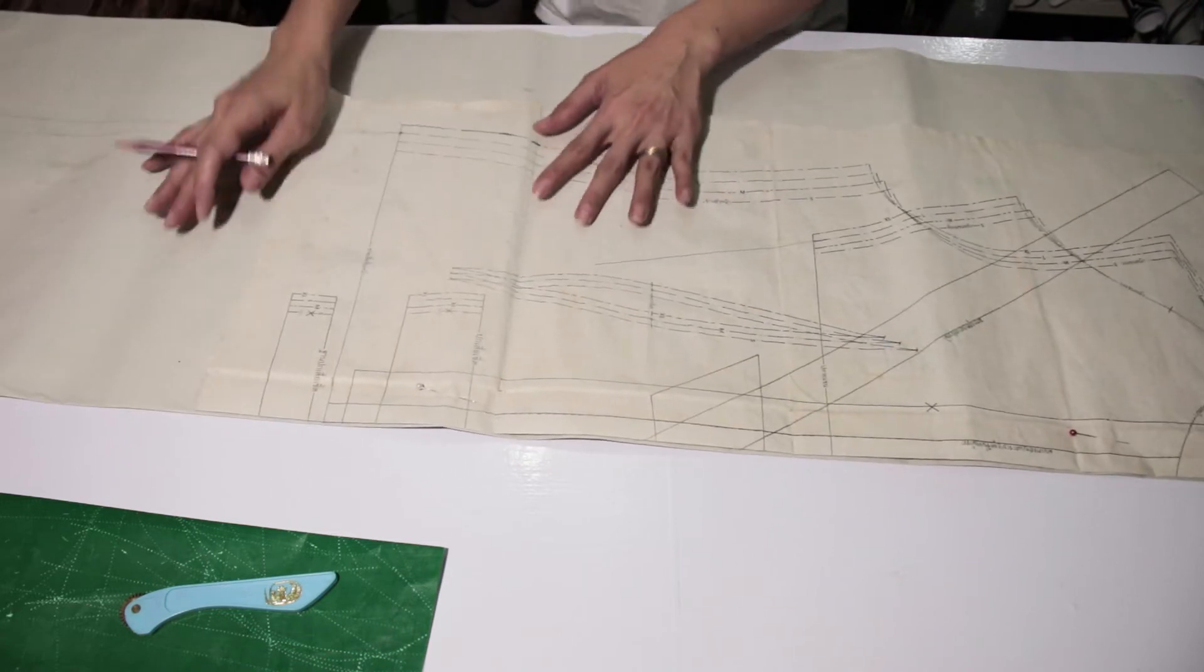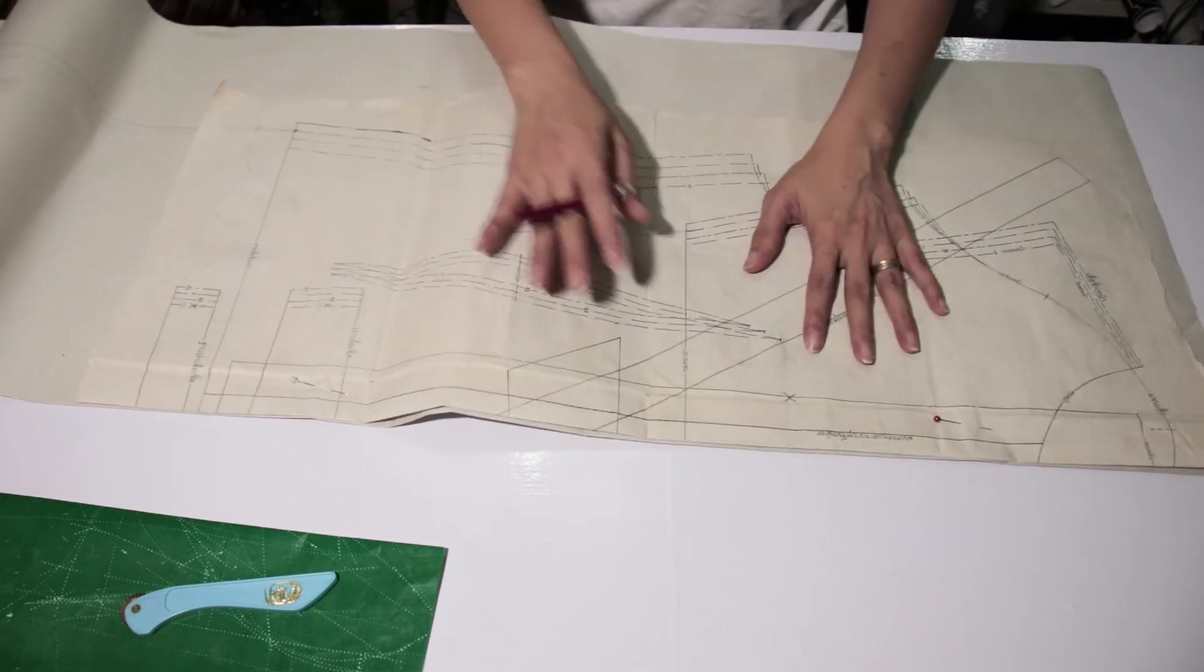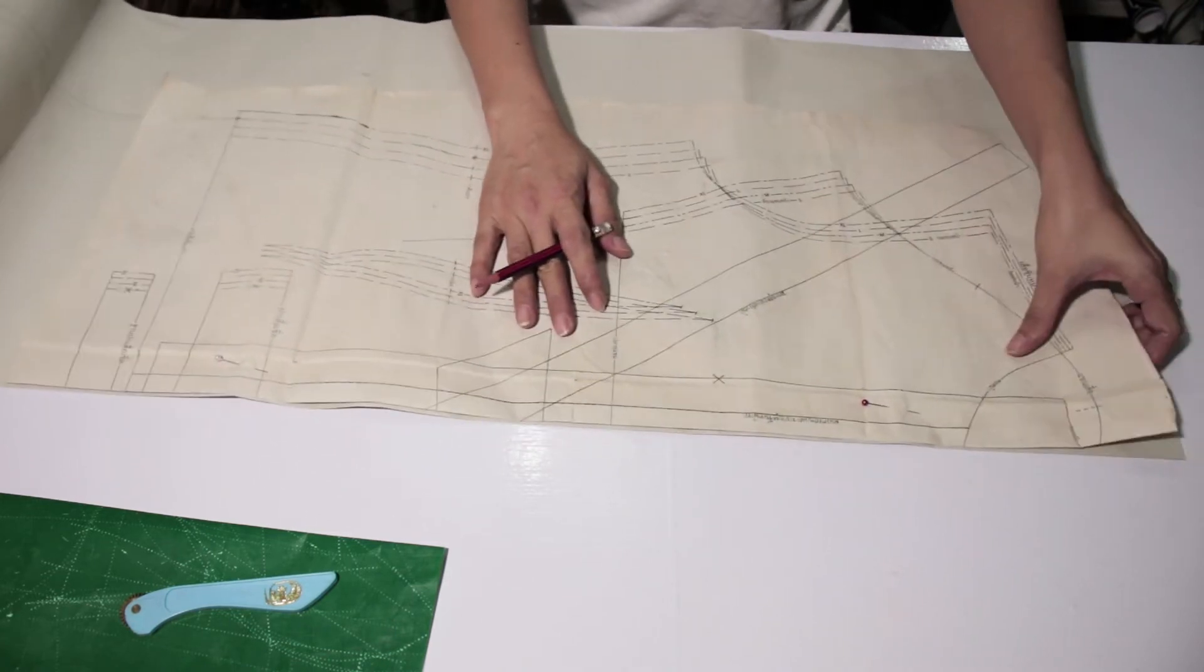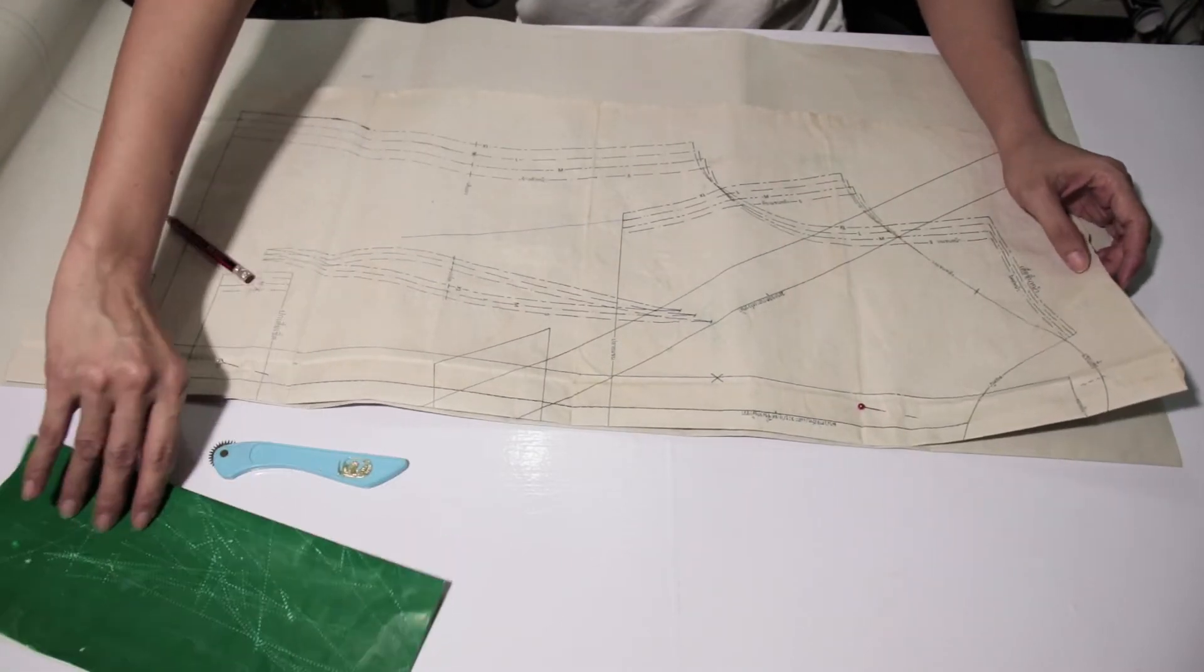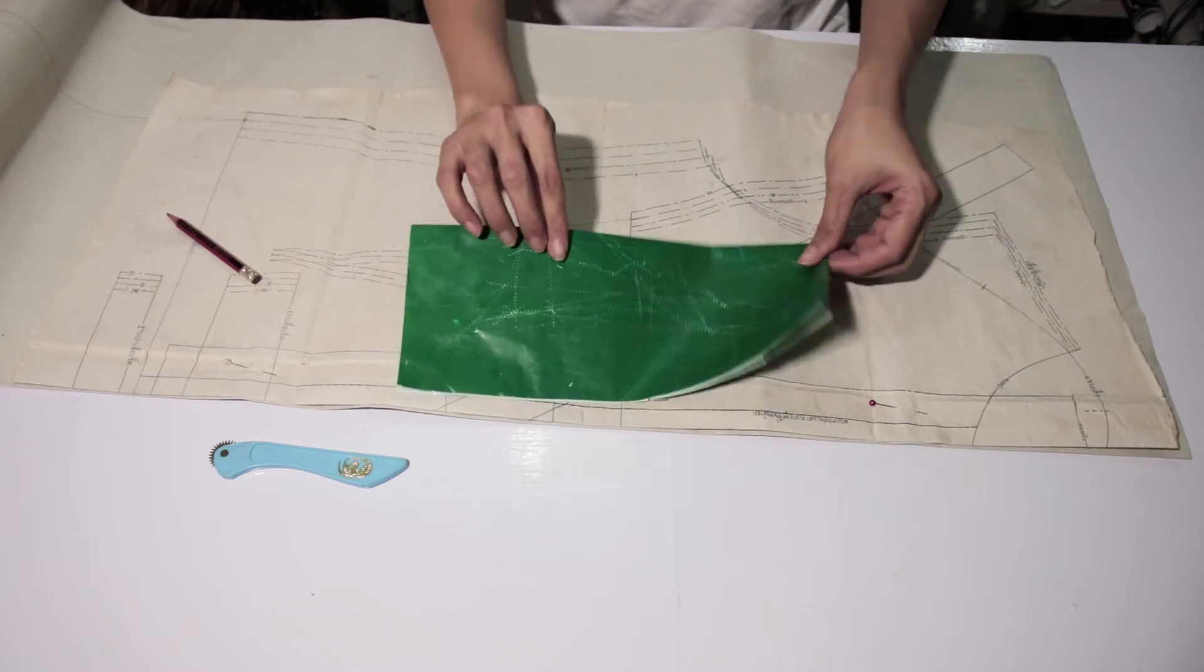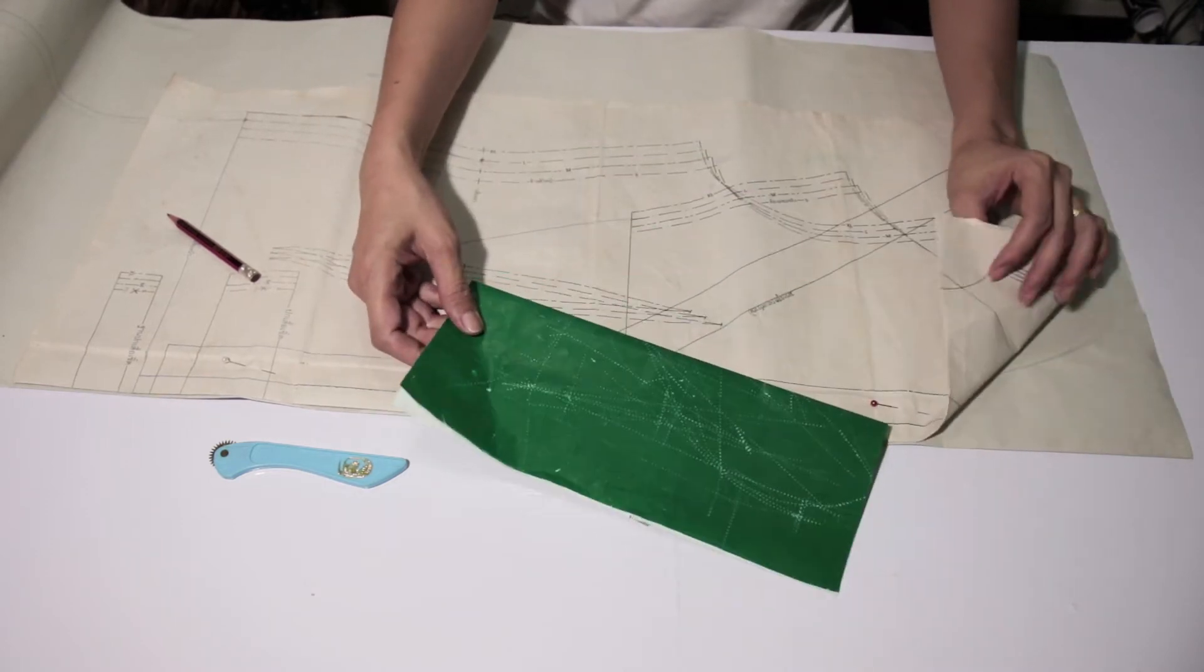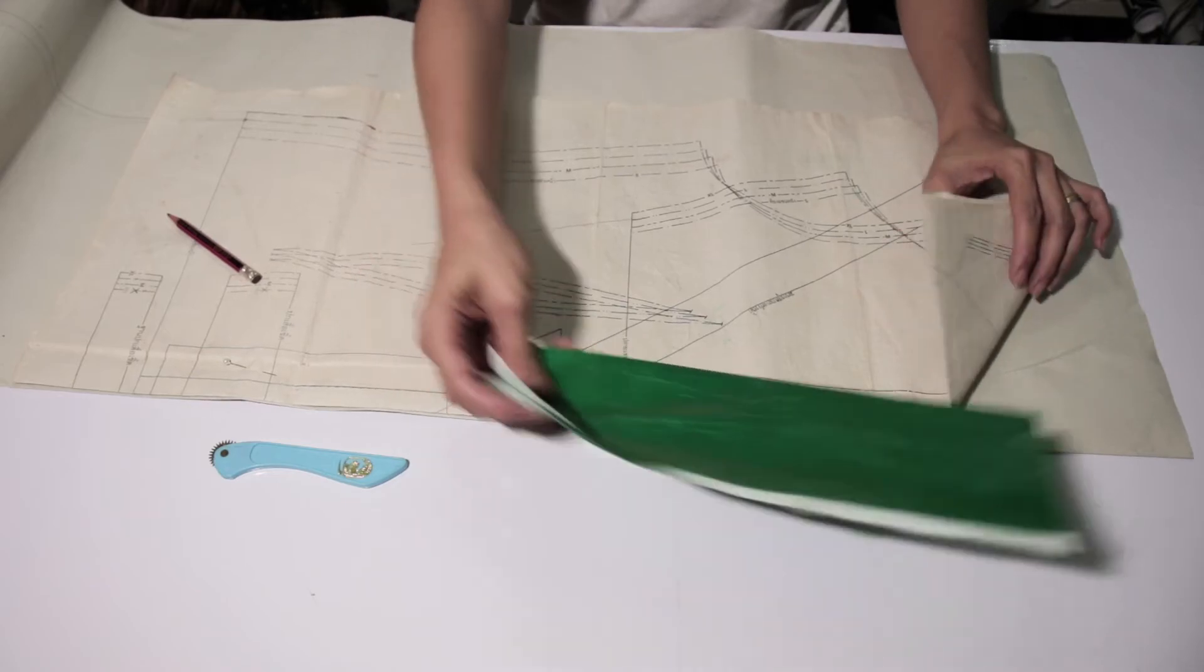Just like that. And next, we're going to copy the pattern to our paper here. And what we're going to do, we're going to slide the carbon paper, make sure that you fold it in half like this, and slide it between the pattern and the paper.